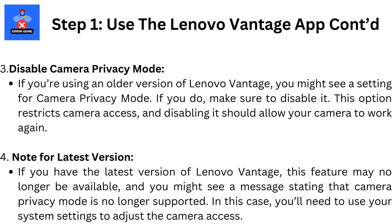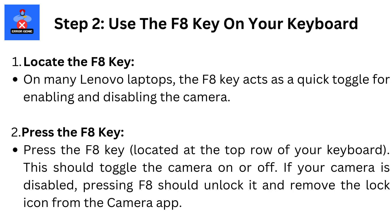Step 2: Use the F8 key on your keyboard. On many Lenovo laptops, the F8 key acts as a quick toggle for enabling and disabling the camera. Press the F8 key, located at the top row of your keyboard. This should toggle the camera on or off. If your camera is disabled, pressing F8 should unlock it and remove the lock icon from the camera app.